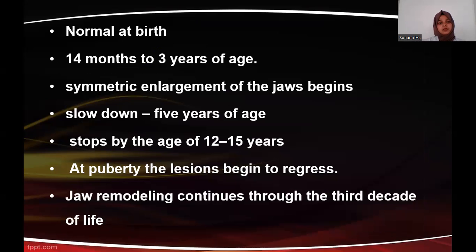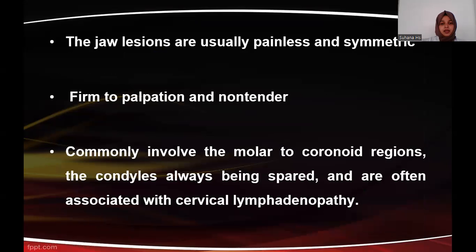The patient will be normal at birth, but between the age of 14 months to 3 years, enlargement of the jaws begins. This slows down at the age of 5 years and completely stops at puberty, around 12 to 15 years. Jaw remodeling continues throughout the third decade of life. The jaw lesions are usually painless and symmetrical, firm to palpation, and involve the molar to coronoid region. The condyle is usually spared, and cervical lymphadenopathy is often associated.